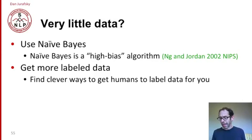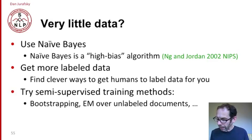But it's also important to get more data. You can often find clever ways to get humans to label data for you. If you don't have enough data, get more data. There are also various ways of semi-supervised training—find some way to use a small amount of data to help train a larger amount of data. That's called bootstrapping.